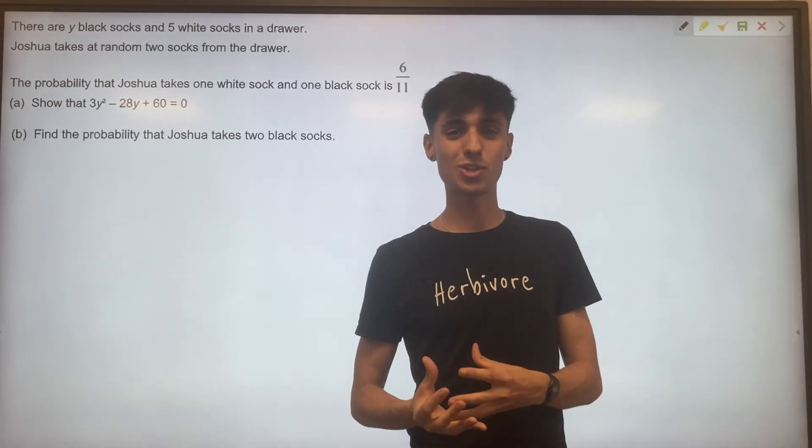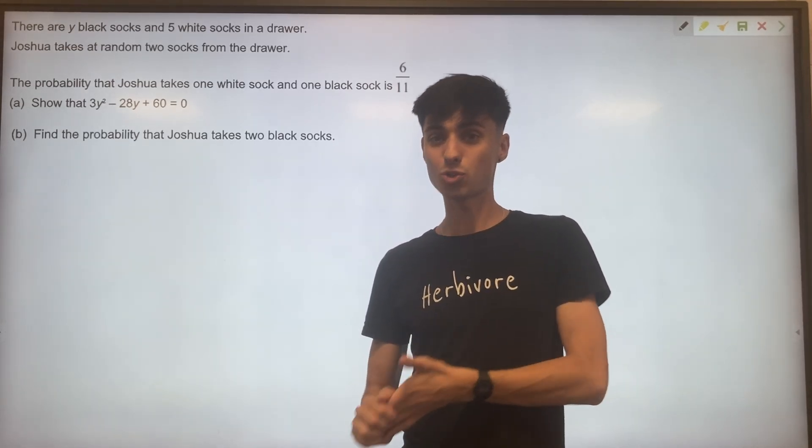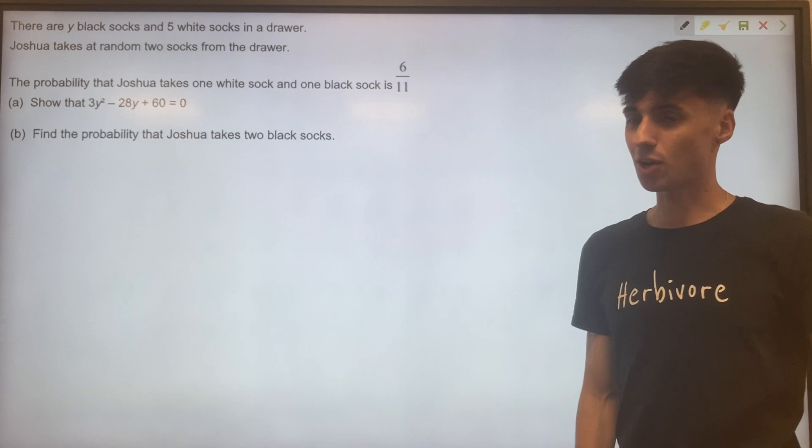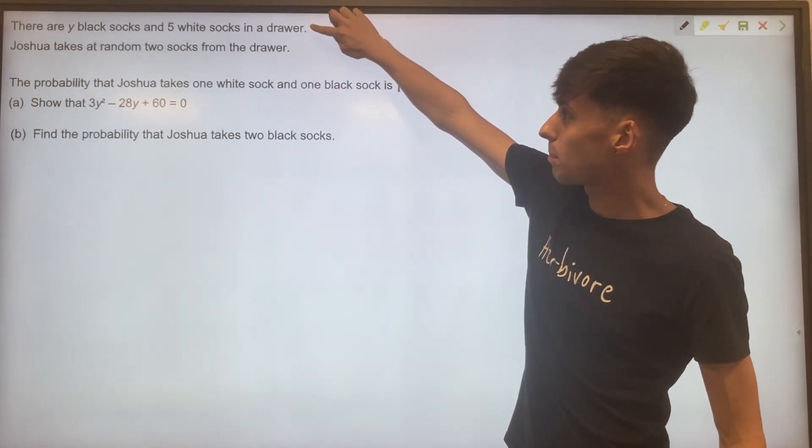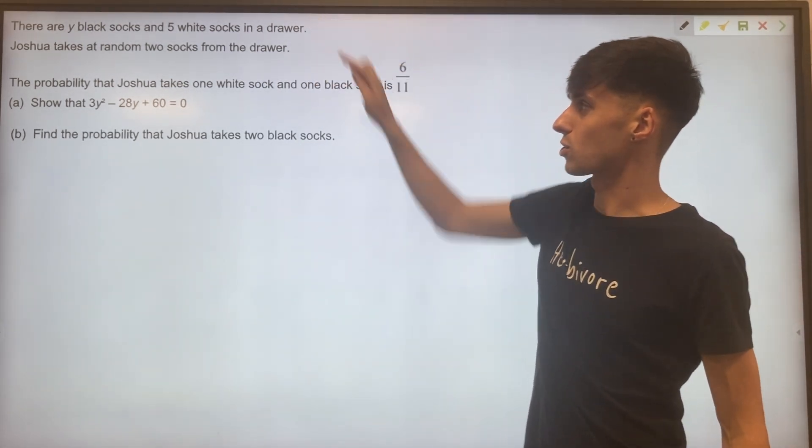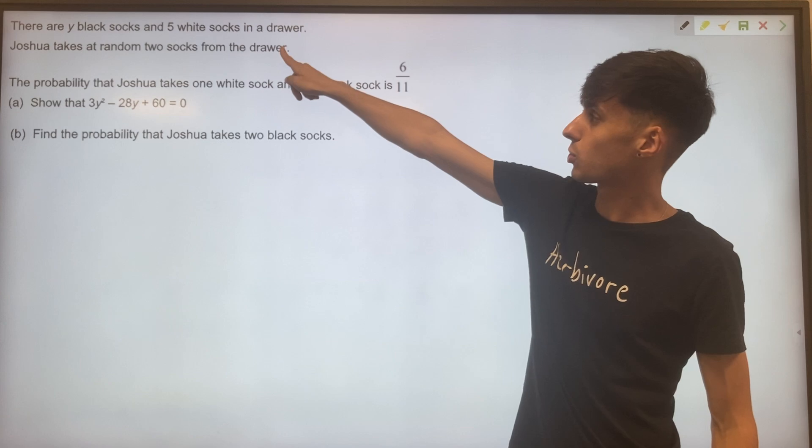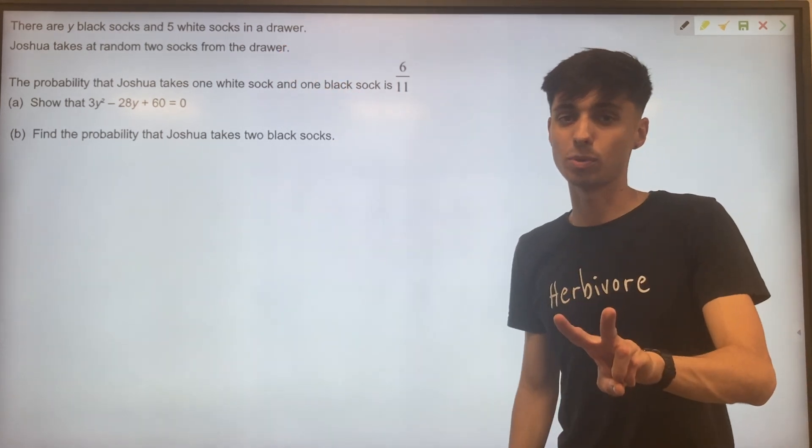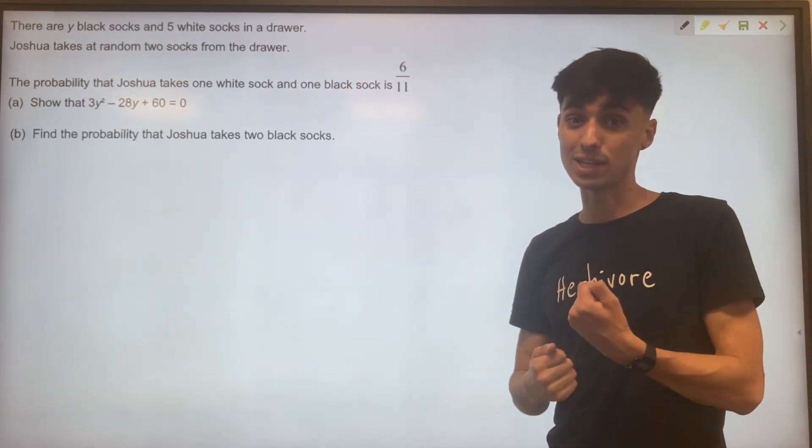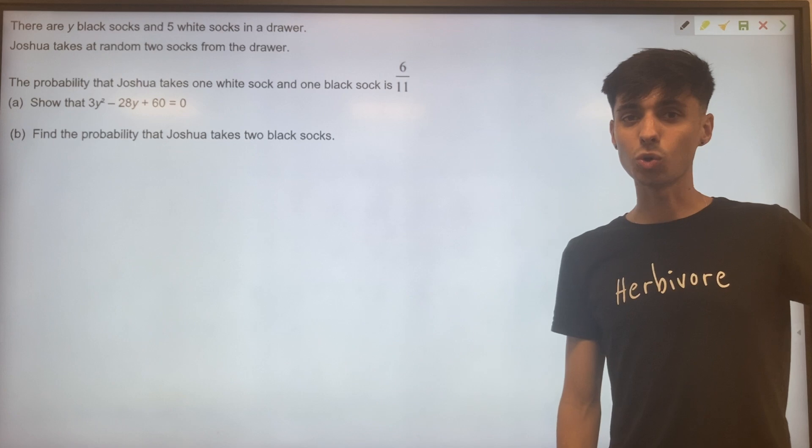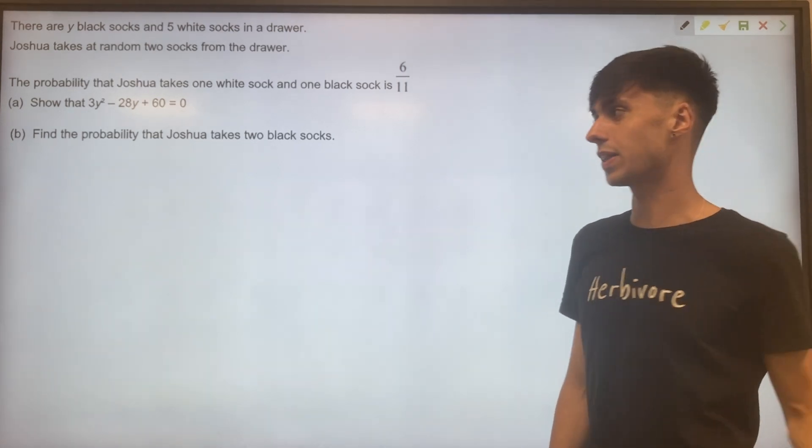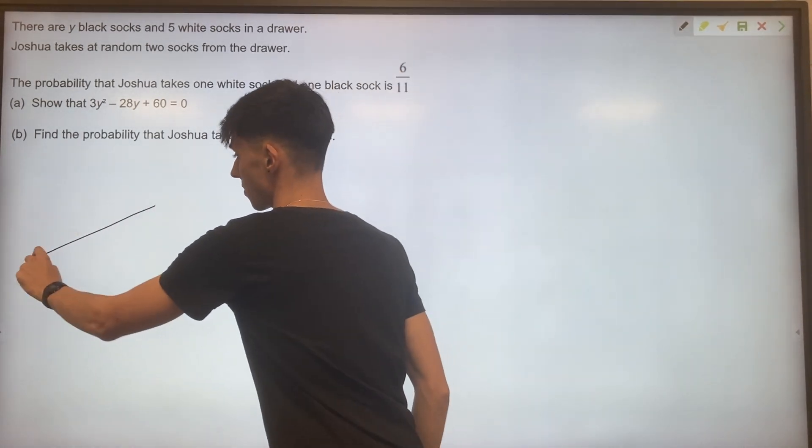This is quite a nasty question involving an algebraic tree diagram. Let's get started. There are y black socks and five white socks in a drawer. Joshua takes at random two socks from the drawer. So that's without replacement. Let's draw the tree diagram for this problem first and then see where to go from there.